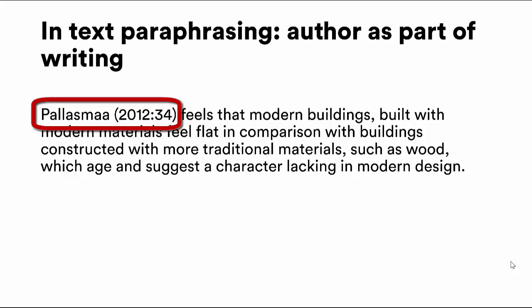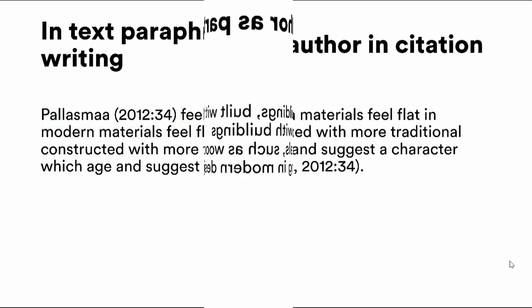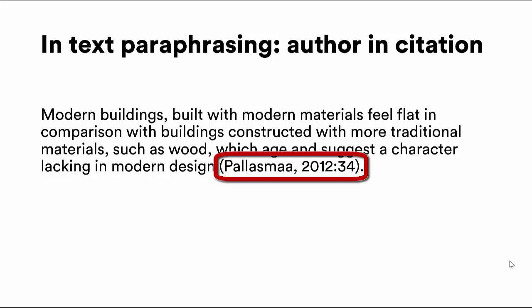Similar to quotes, there are two main ways of referencing a paraphrase. In this first instance, we reference the author as part of the sentence — so we name Palazno, include the citation the same as before, and then reword what they've said. We put it into our own language, simplifying it, removing technical terms we're less familiar with, and produce it as a sentence to summarize their argument.